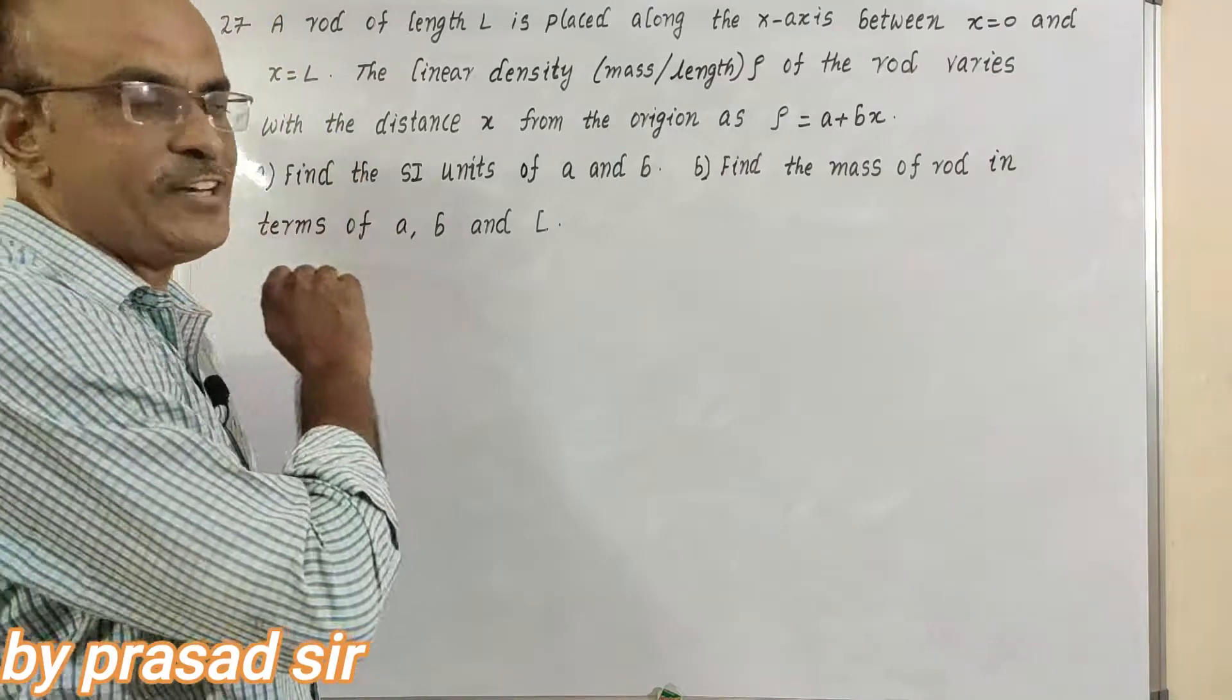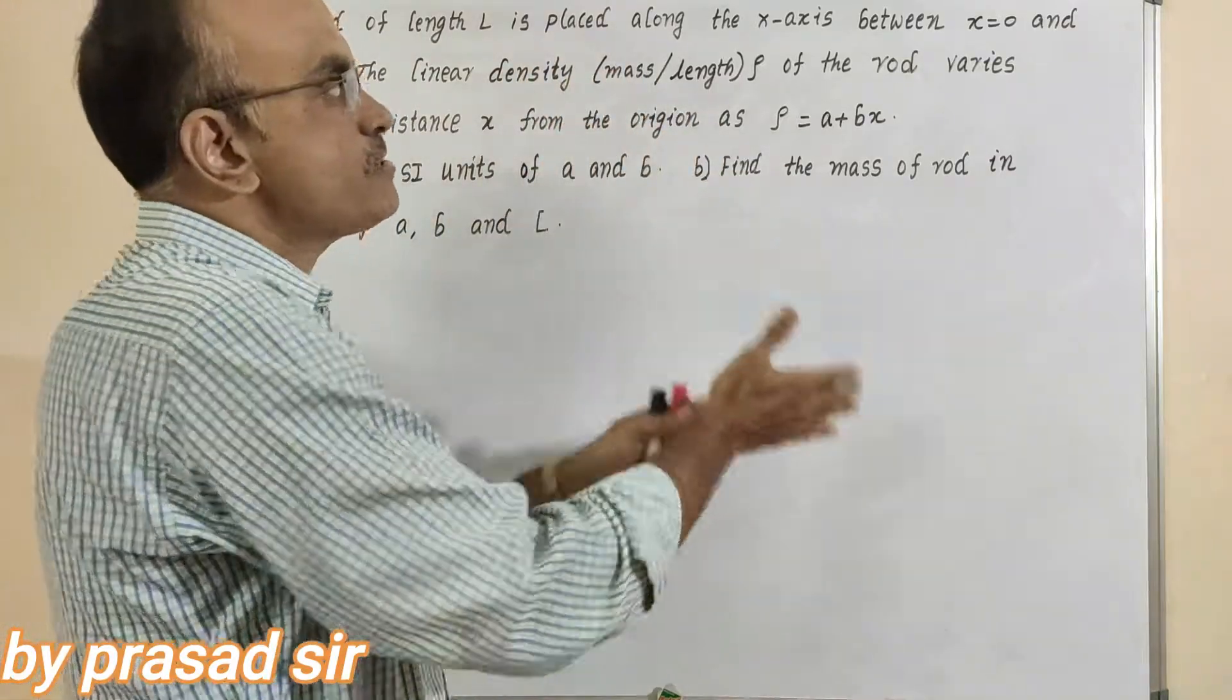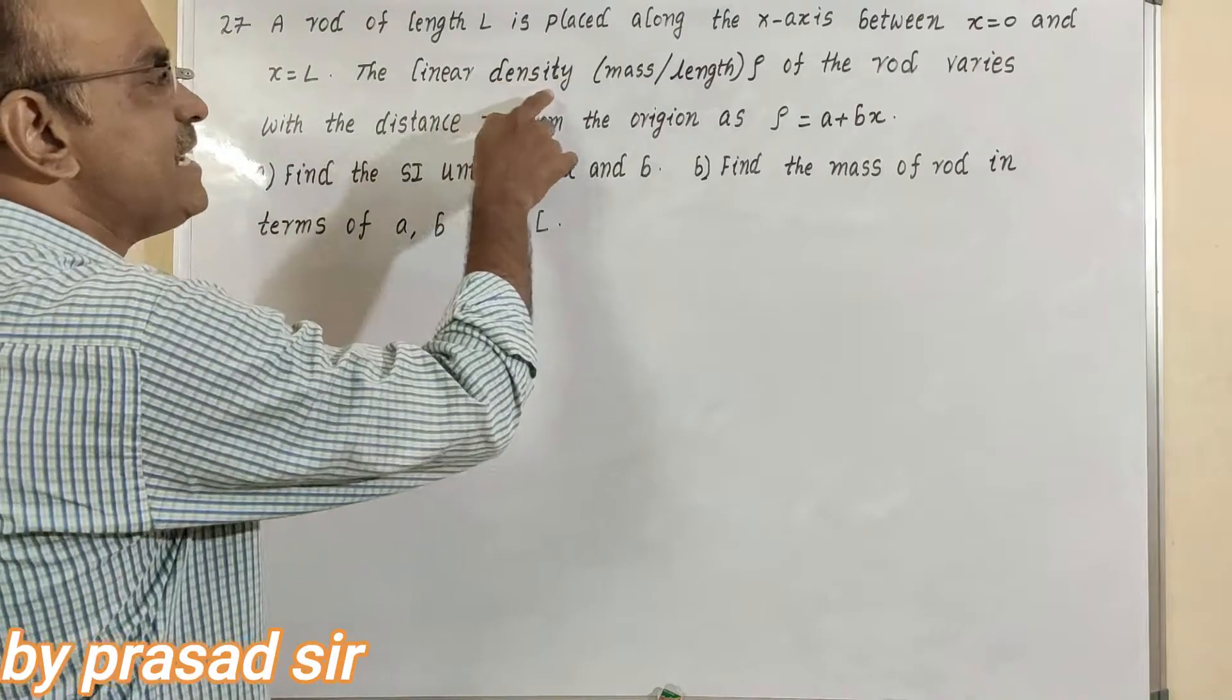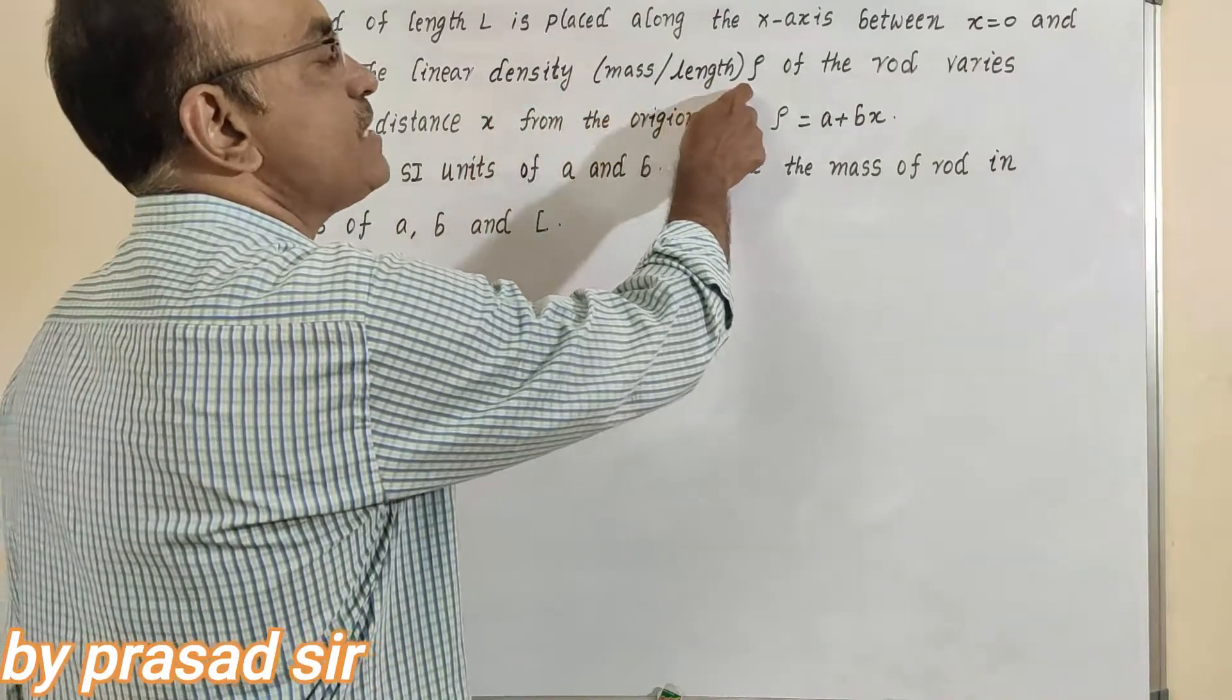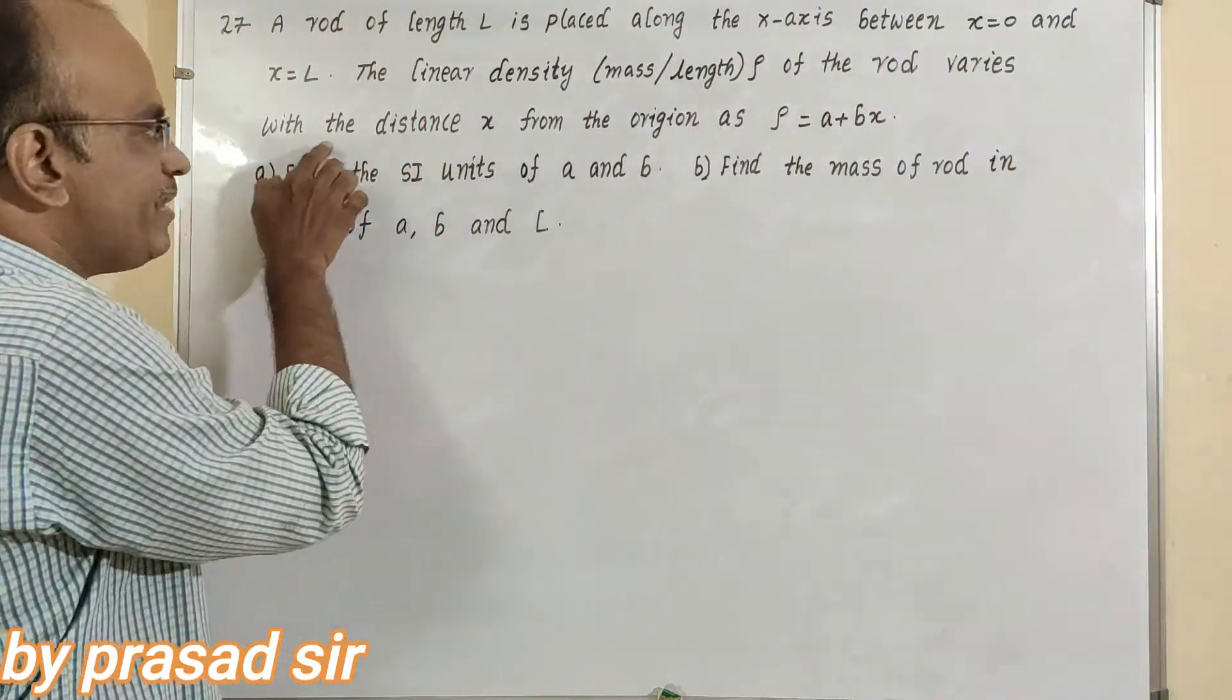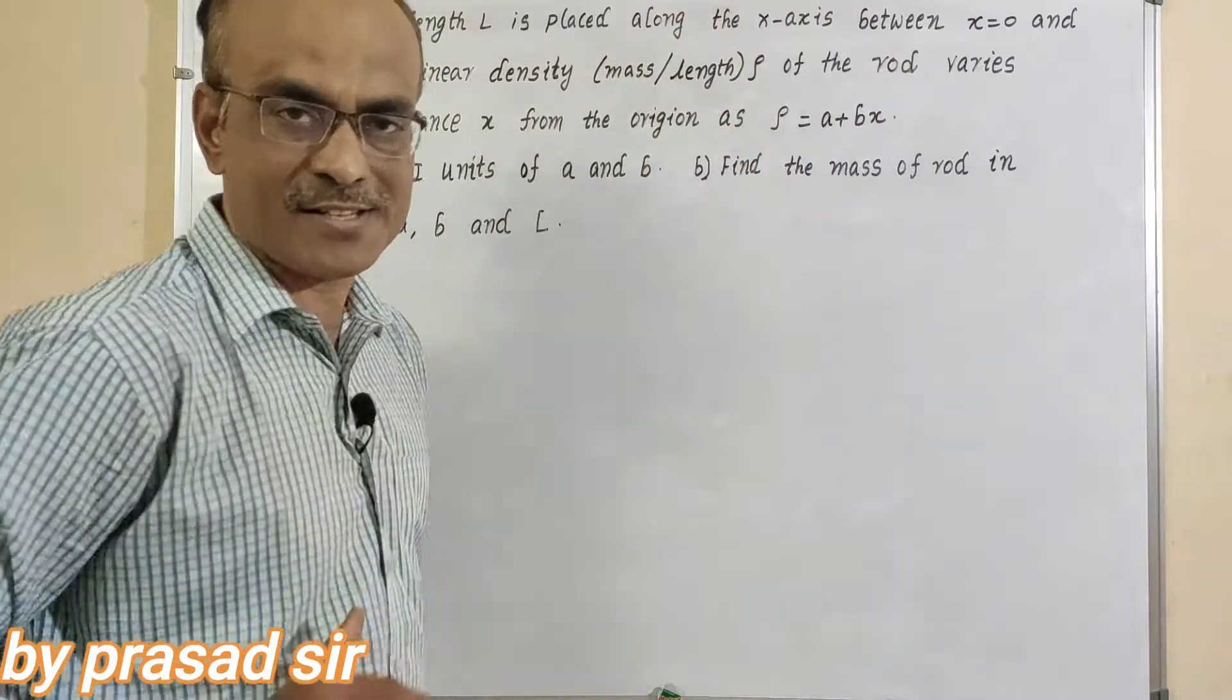Question number 27. A rod of length L is placed along the x-axis between x equals 0 and x equals L. The linear density mass by length that is represented by rho of the rod varies with the distance x from the origin as rho equals A plus Bx.